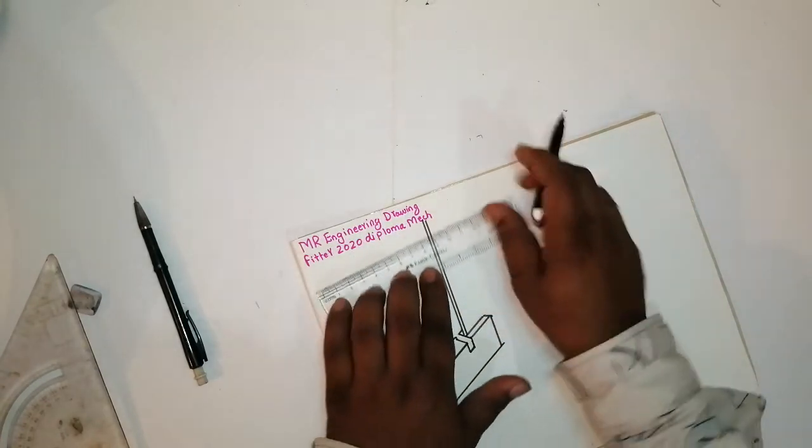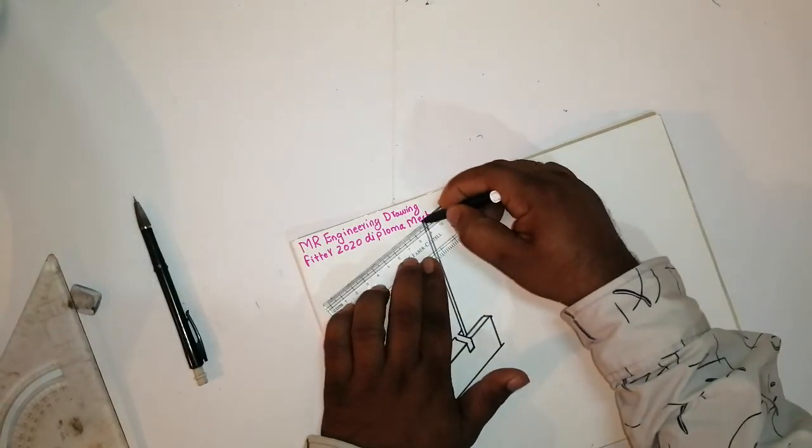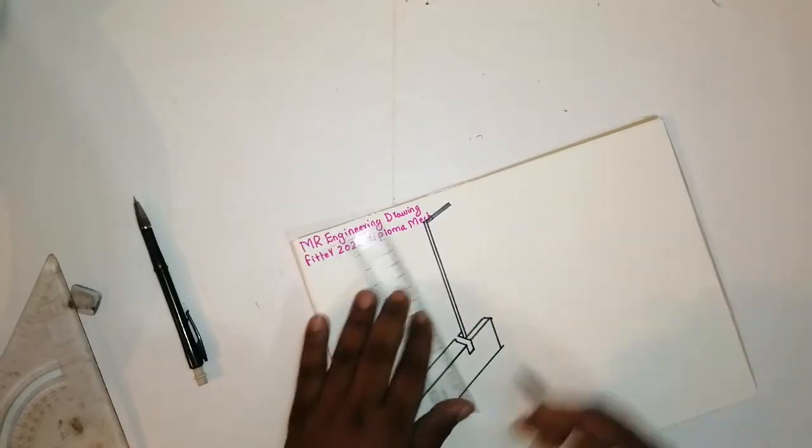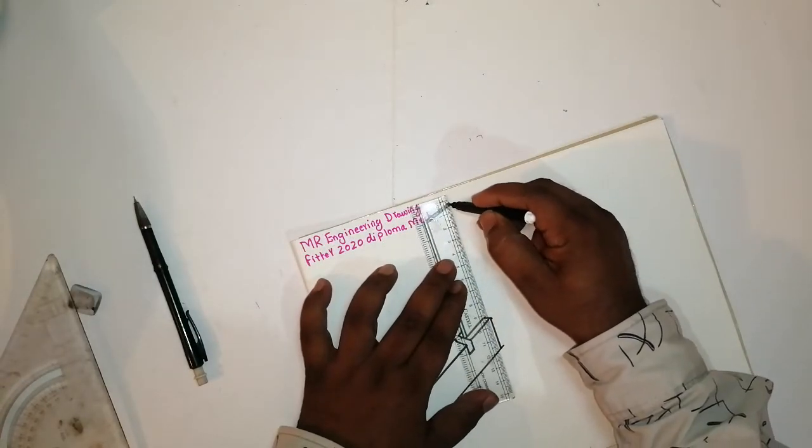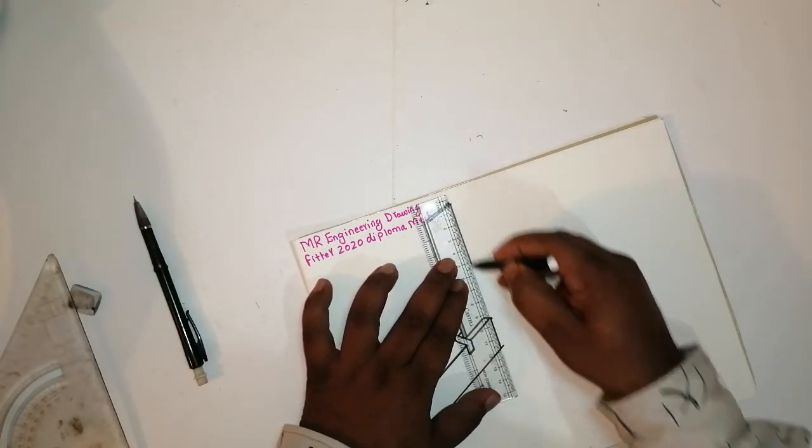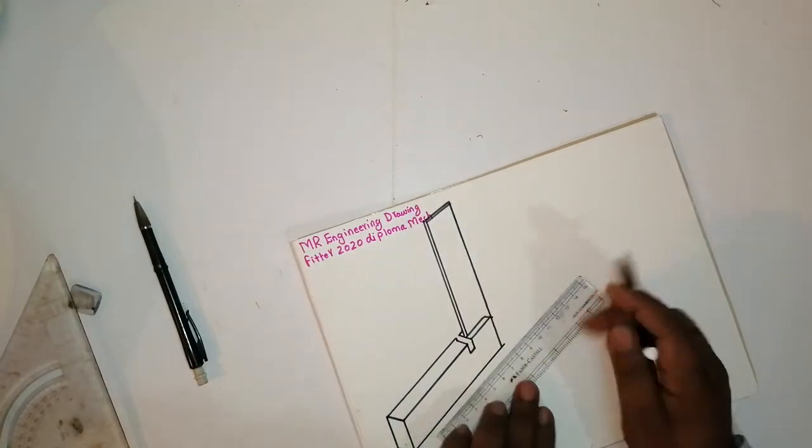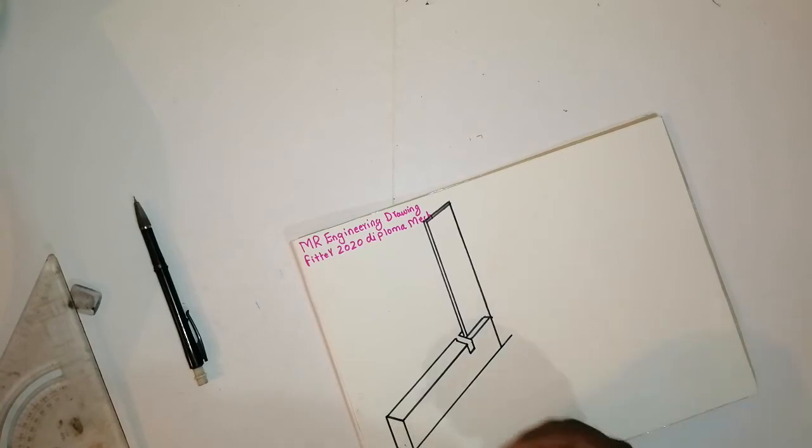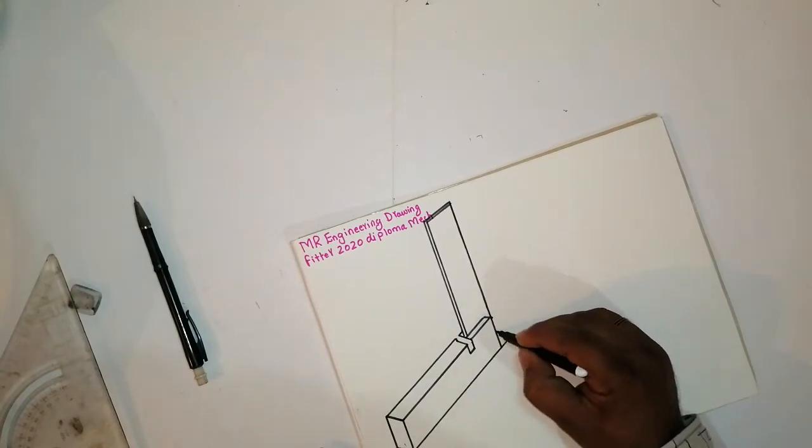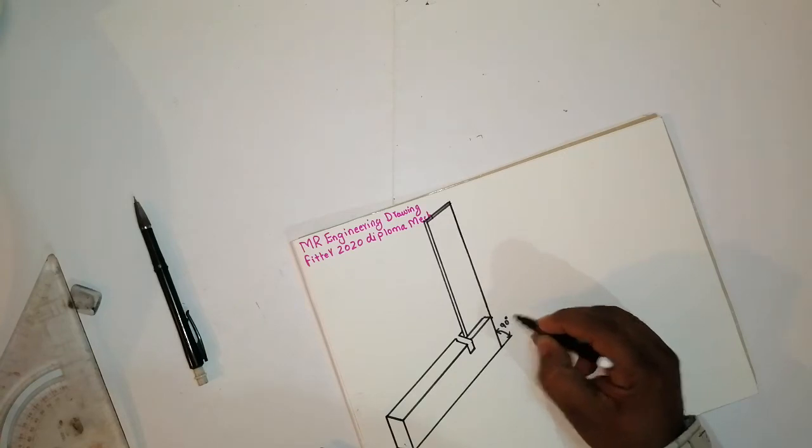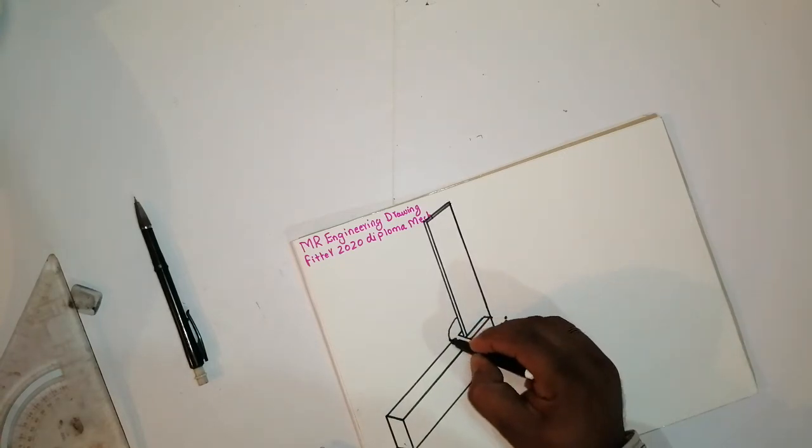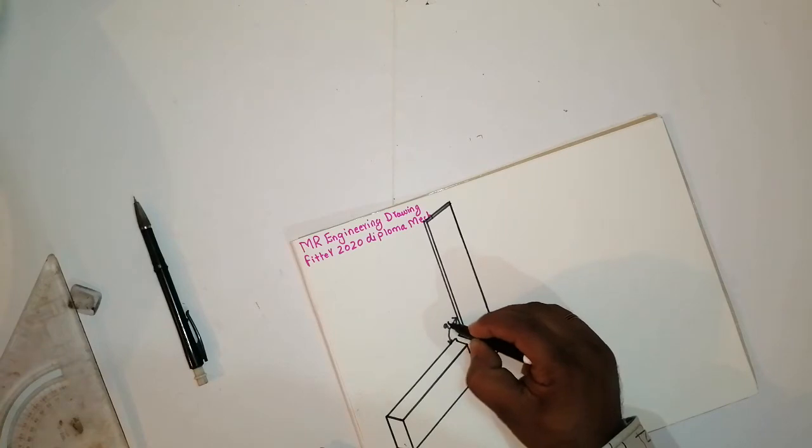Okay friends, we can draw like this. That is all friends. This is very easy drawing. This is a try-square. This is 90 degree. This is also 90 degree.